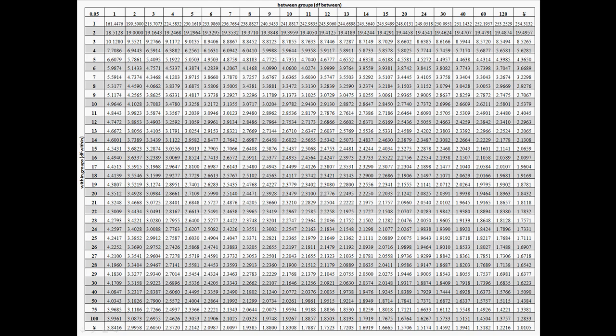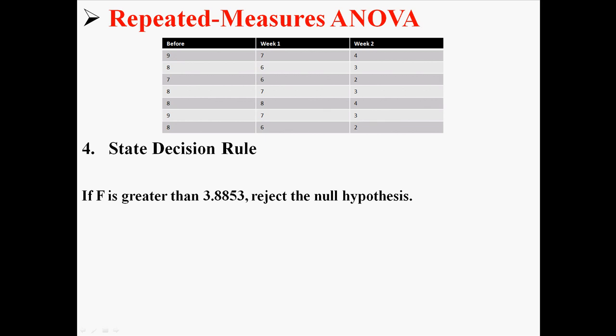So I'm going to go to my big F table that has between groups on the top and within groups on the left side. And I'm going to look up 2 and 12, which gives me a critical value of 3.8853. That means that if F is greater than 3.8853, we will reject the null hypothesis. That is our decision rule.